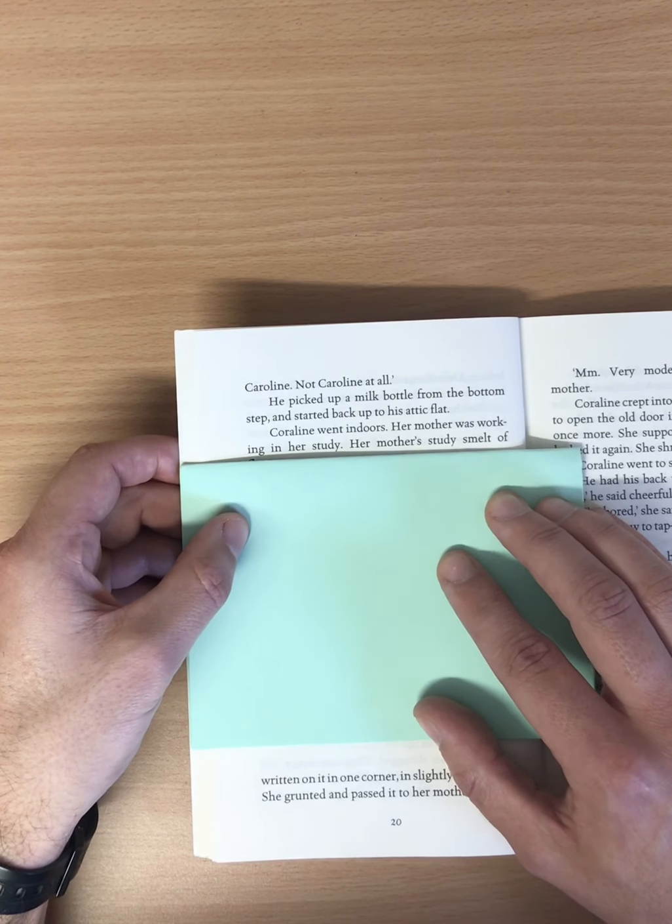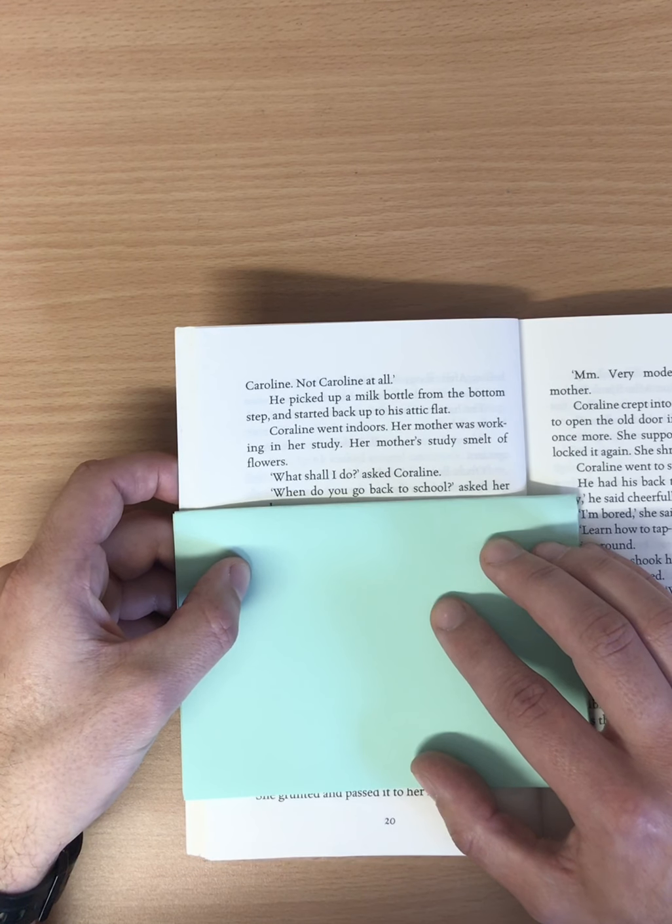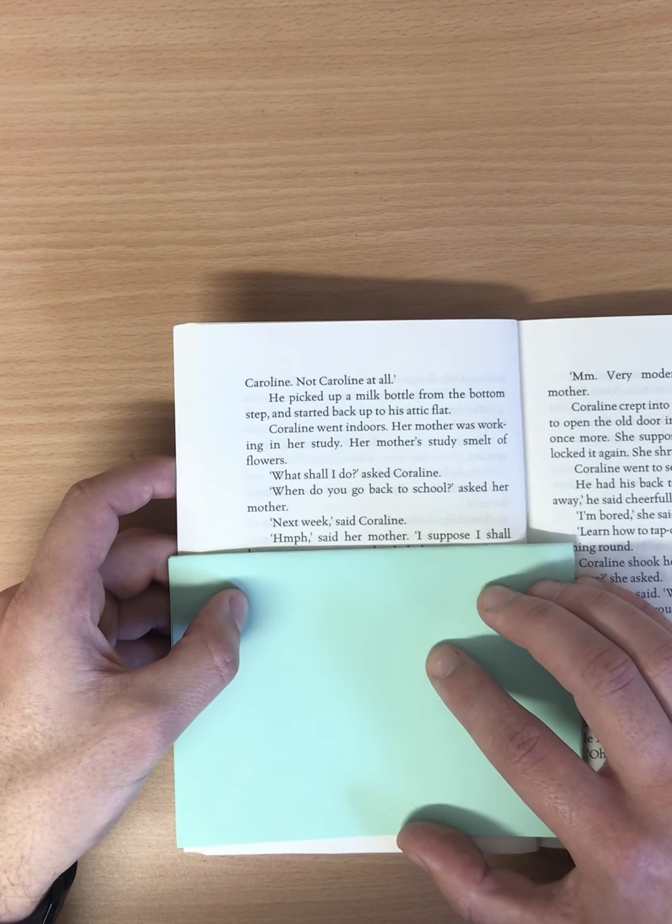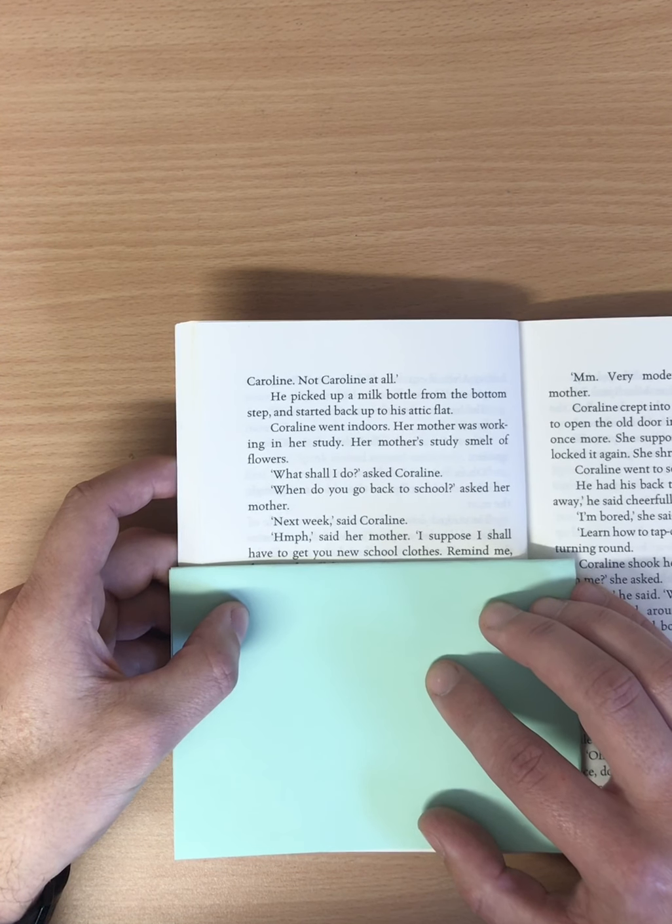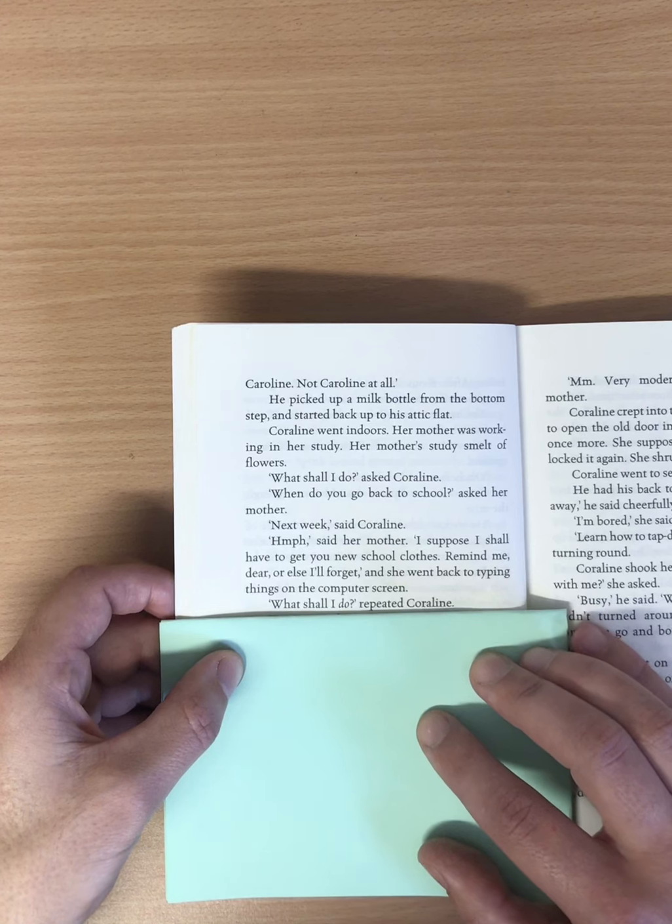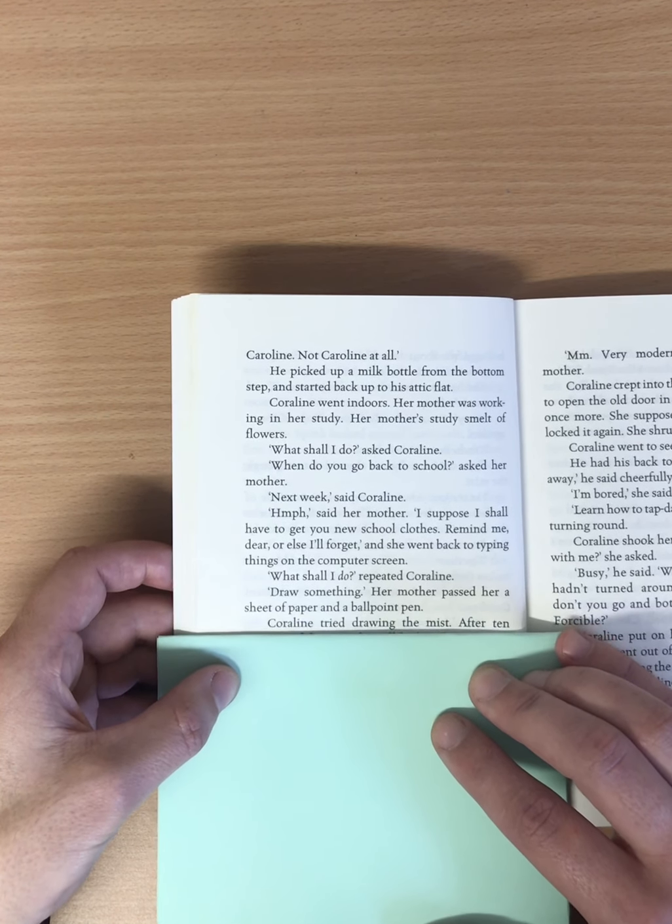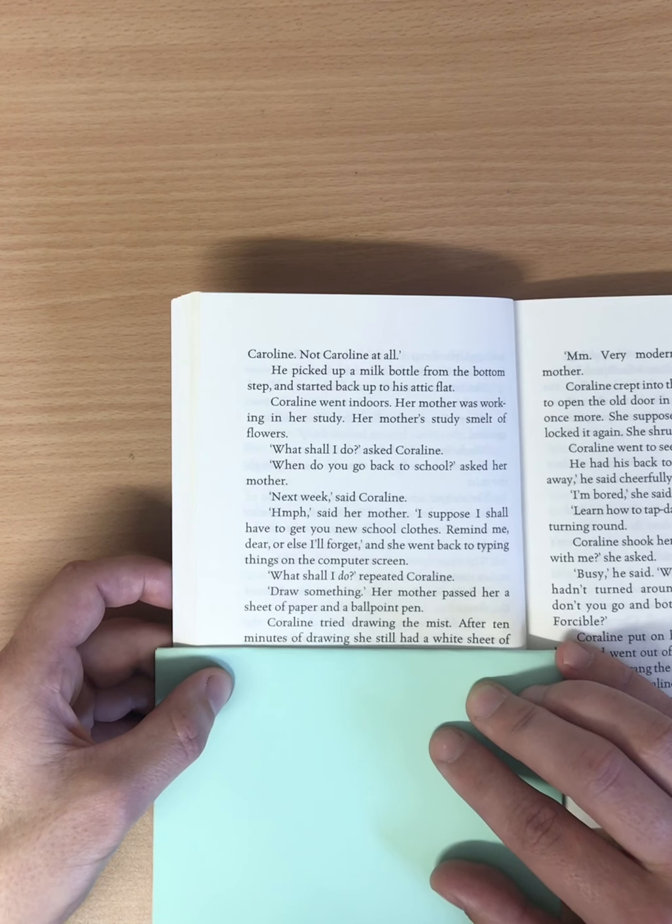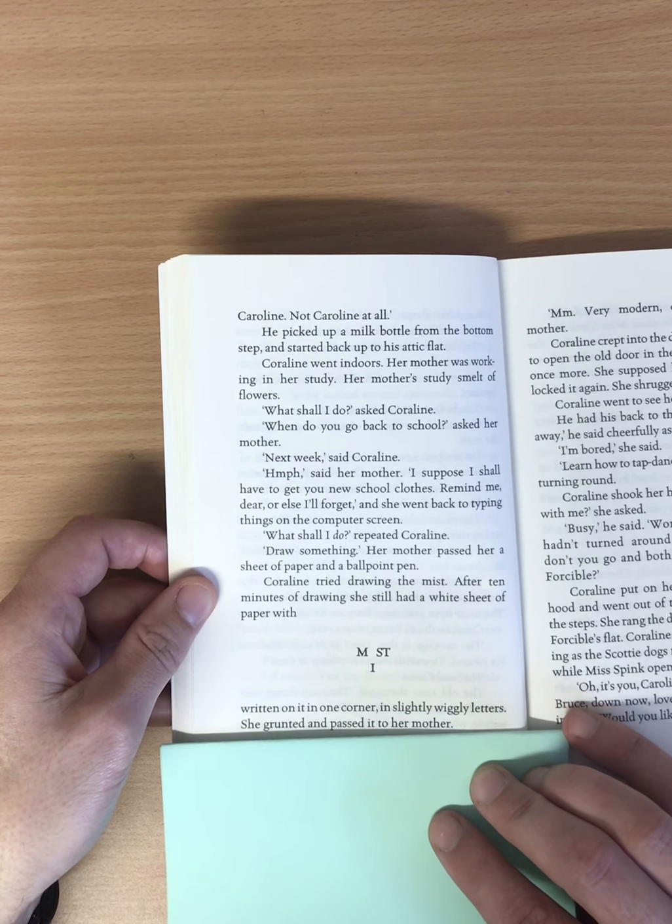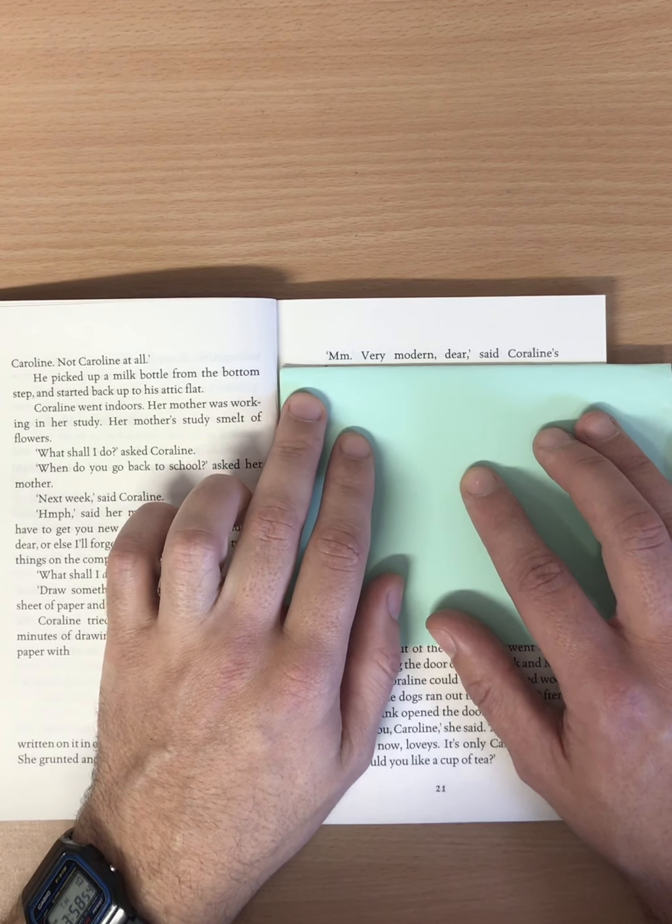Her mother was working in her study. Her mother's study smelt of flowers. What shall I do? asked Coraline. When do you go back to school? asked her mother. Next week, said Coraline. Hmm. Said her mother. I suppose I shall have to get you new school clothes. Remind me, dear, or else I'll forget. And she went back to typing things on the computer screen. What shall I do? repeated Coraline. Draw something. Her mother passed her a sheet of paper and a ballpoint pen. Coraline tried drawing the mist. After ten minutes of drawing, she still had a white sheet of paper with written on it in one corner in slightly wiggly letters. She grunted and passed it to her mother. Hmm. Very modern, dear, said Coraline's mother.